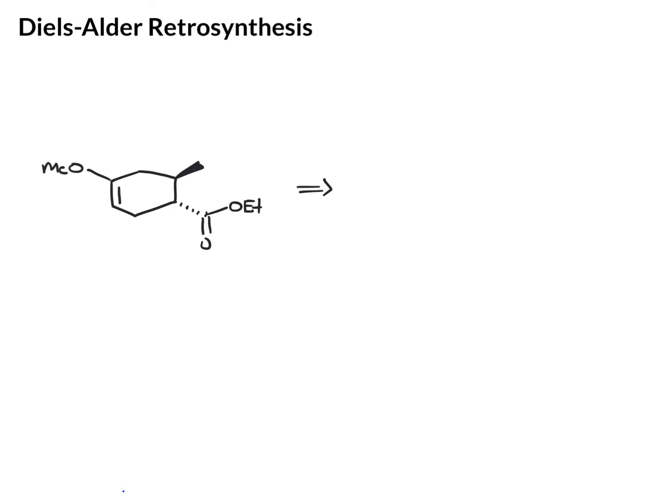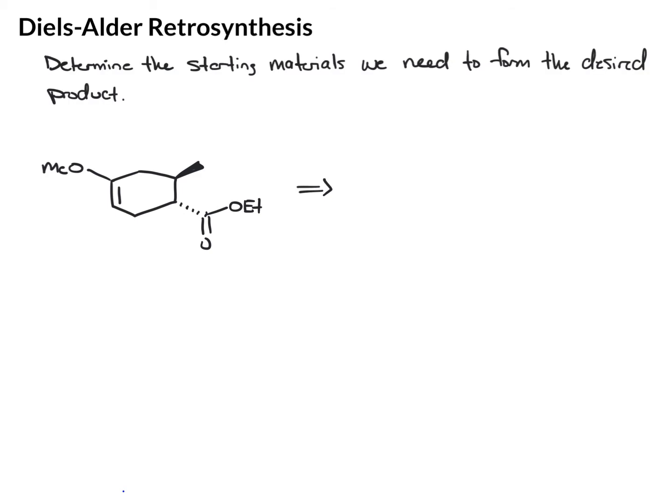When doing Diels-Alder retrosynthesis, what we're trying to do is determine the starting materials that can be used to form the product. Here we have a Diels-Alder reaction product, and you should spot that quite easily because of the six-membered ring. If we want to think about breaking this apart to figure out what starting materials it could have come from, you want to think about where your diene would be and where your dienophile would be.